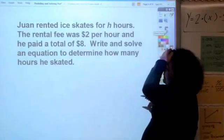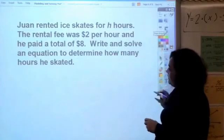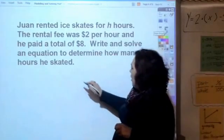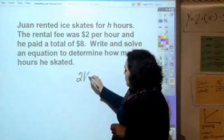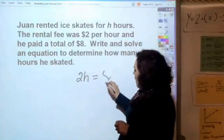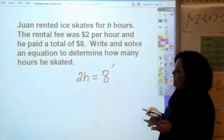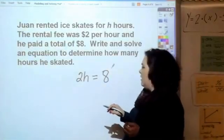You're going to see these in word problems. Juan rented ice skates for h hours. The rental fee was two dollars per hour, 2h, and he paid a total of eight dollars. The total always goes after the equal sign. Write and solve an equation to determine how many hours he skated.